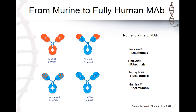You should memorize '-umab' because people are now generating just fully human monoclonal antibodies. The biggest problem with murine monoclonal antibodies is that they have a lot of side effects — you can get allergies and maybe even anaphylaxis, which can be a serious problem.